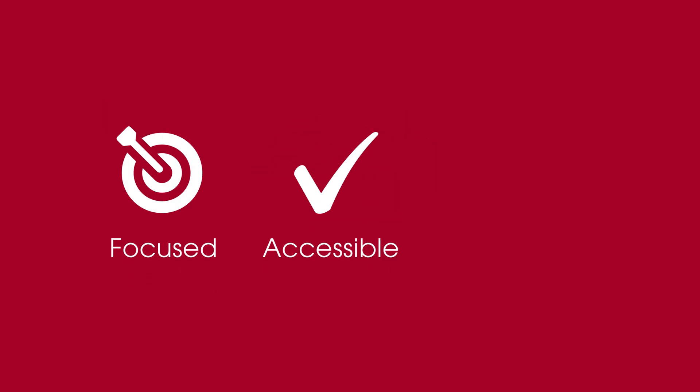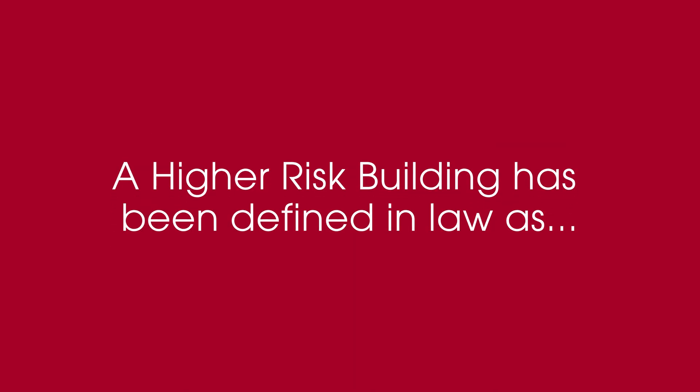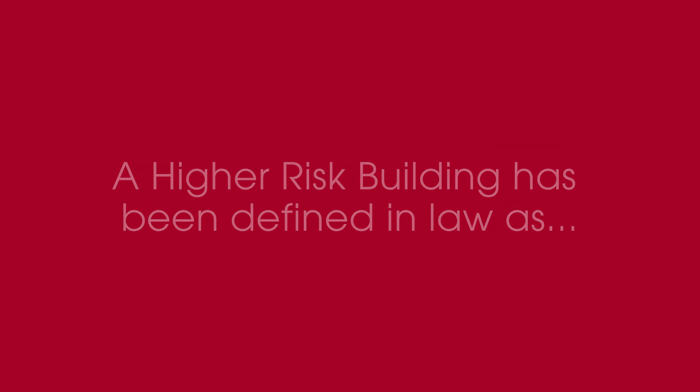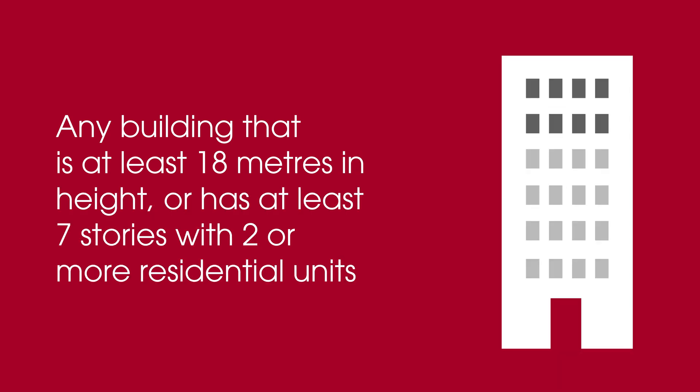We're talking about the complete life cycle of a building. The Golden Thread needs to be focused, accessible, and importantly in a digital format that is easy to use for all. A higher risk building has been defined in law as any building that is at least 18 metres in height or has at least seven storeys with two or more residential units.